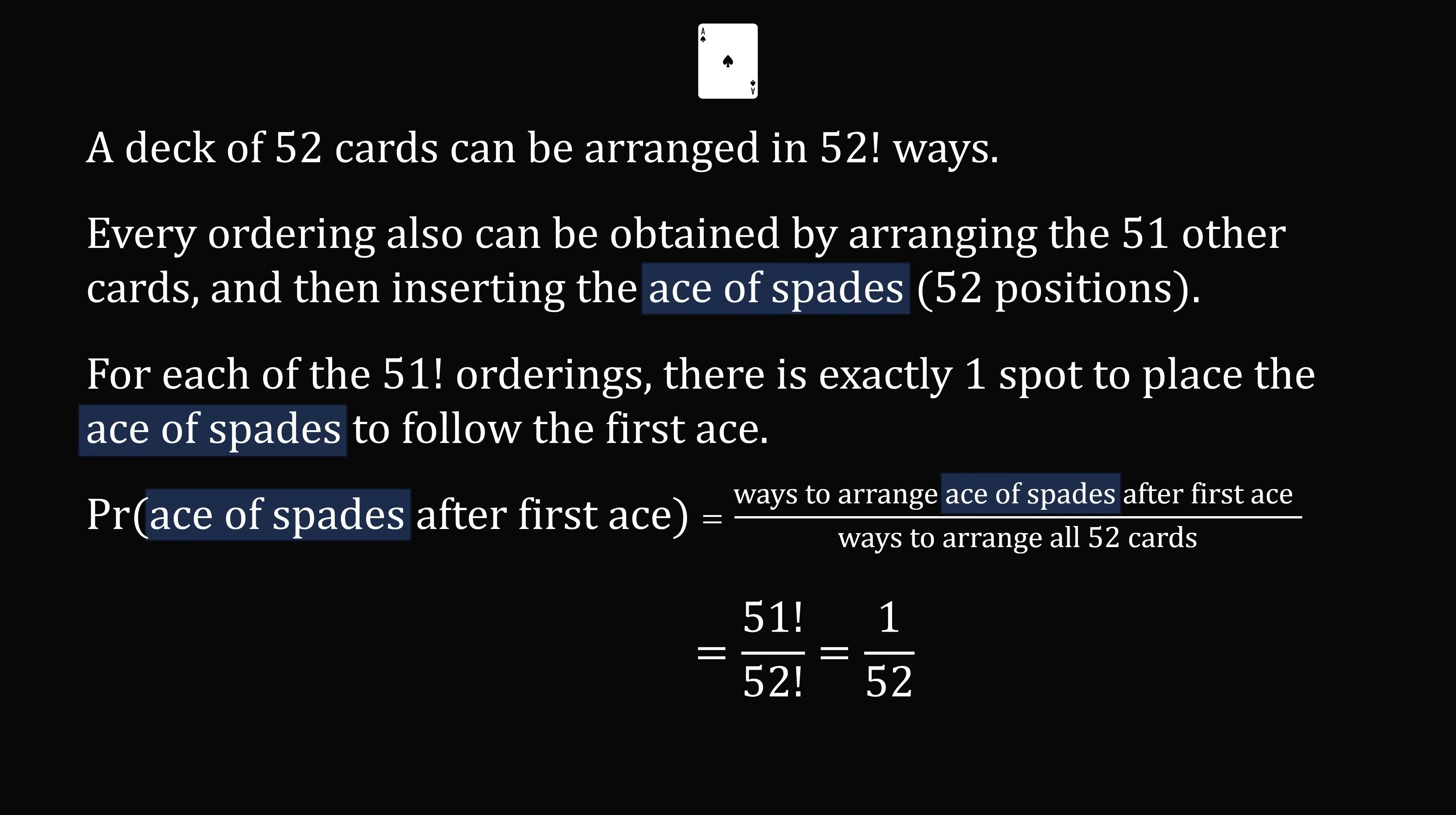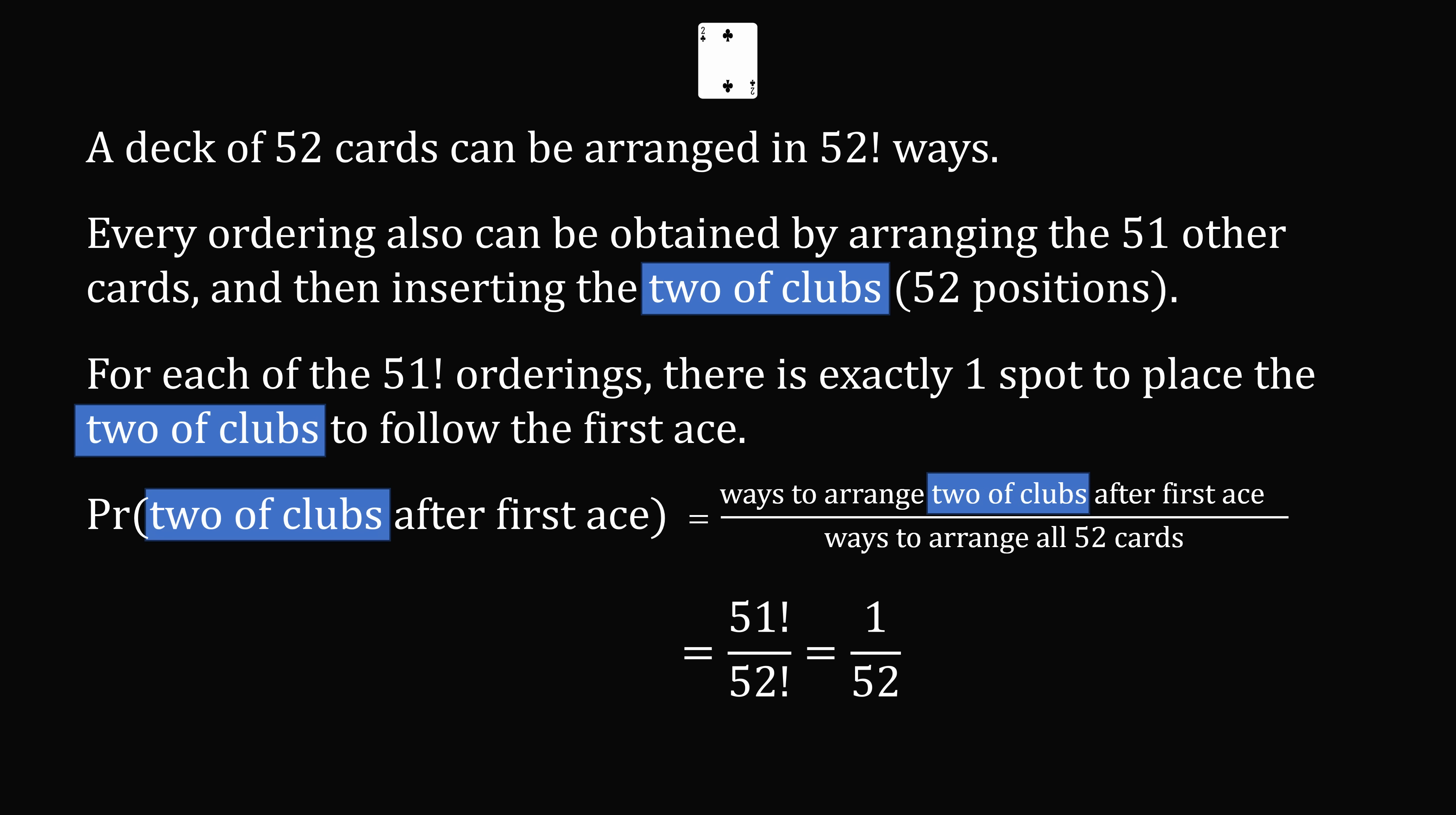So now, think about this calculation and every single spot that we referred to the ace of spades. In fact, the exact same logic will apply to the calculation if we change the card to the two of clubs. It's exactly the same calculation. There are 51 factorial ways that you could put the two of clubs after the first ace, and there are 52 factorial ways that you could arrange the deck.